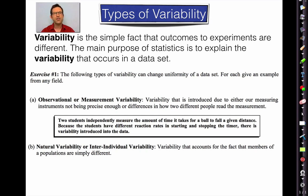Let's look at letter B: natural variability, or inter-individual variability. This is variability that accounts for the fact that members of a population are just different. Members of a group that we're surveying or working with are different because they've got different genetic codes, different ways they behave. Human beings and other living creatures are amazingly complex, and those little differences are what are called natural variability or inter-individual variability.